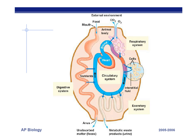This is a diagram of a generalized animal showing the interaction of all the systems together. This is not a particular animal — it's just to show how the systems interact with each other. You do need to know this. It's not enough to just know how the digestive system or circulatory system functions individually; you also need to know how they interact with each other.